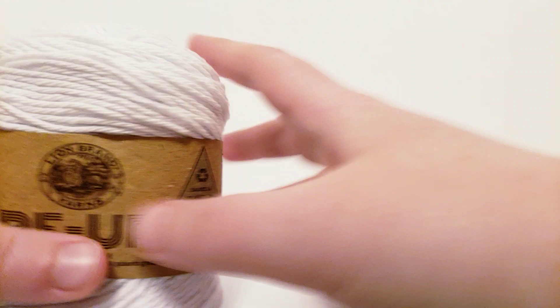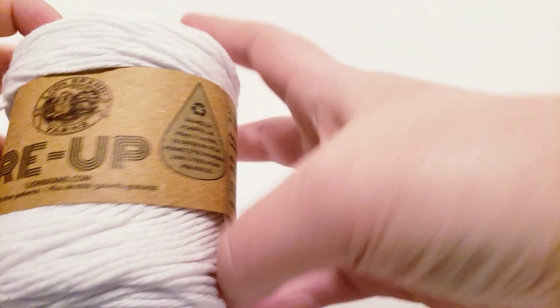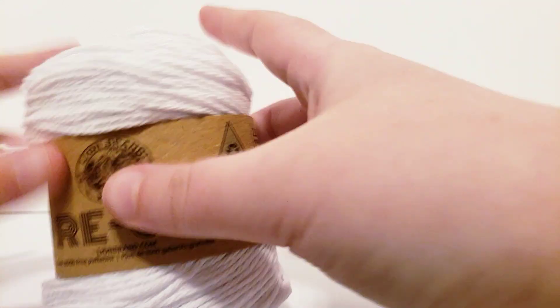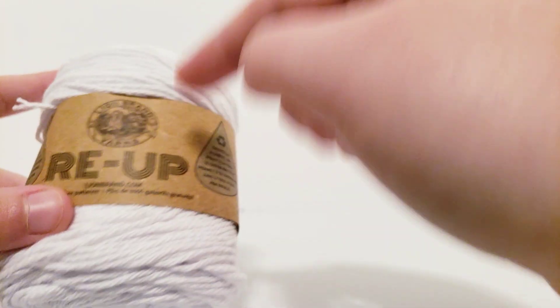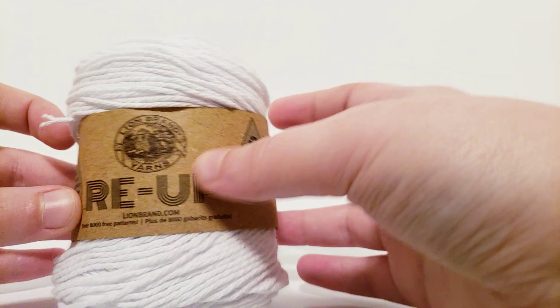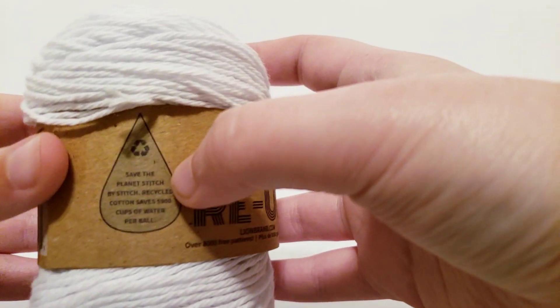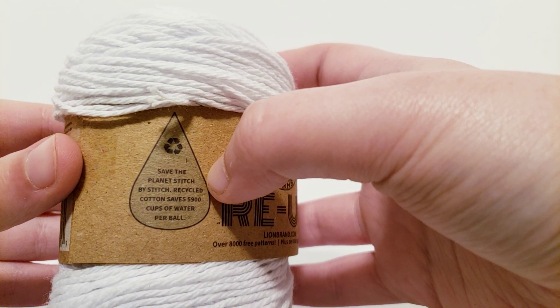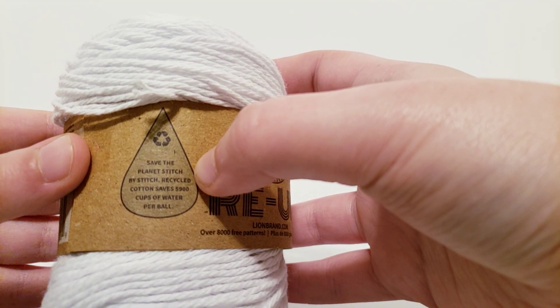Let's go ahead and look at the yarn. Now, I did some research on this yarn before I started this video because I wanted to make sure that everything was correct for y'all. This is a recycled cotton, so it's eco-friendly. And it says here on the tag, save the planet stitch by stitch, recycled cotton. It saves 5,900 cups of water per ball.